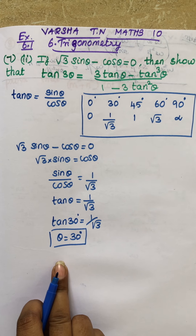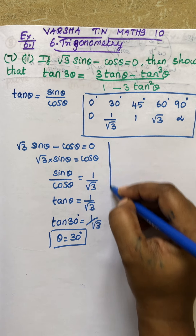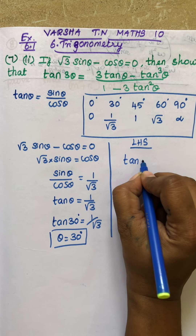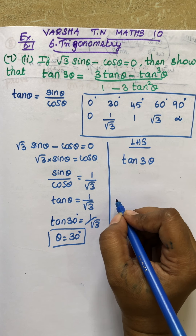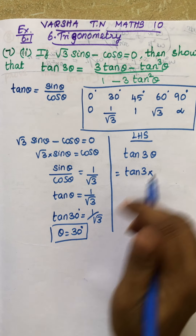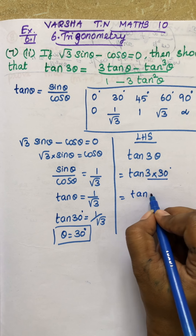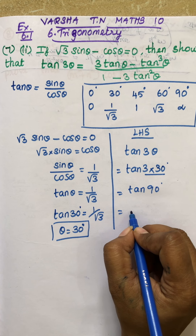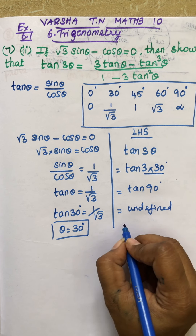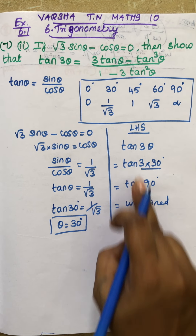Now the question asks us to find LHS, which is tan 3θ. So tan 3 times 30° equals tan 90°. The value of tan 90° is undefined, which means it is infinity. So LHS equals infinity.